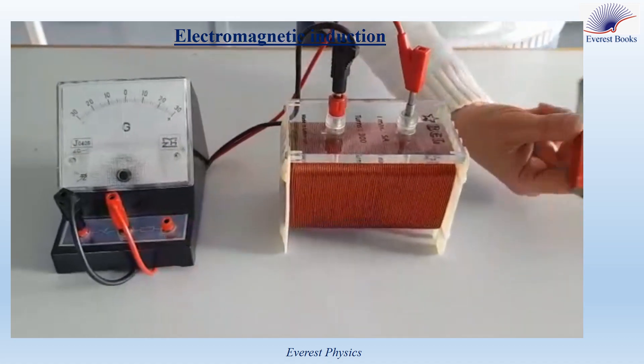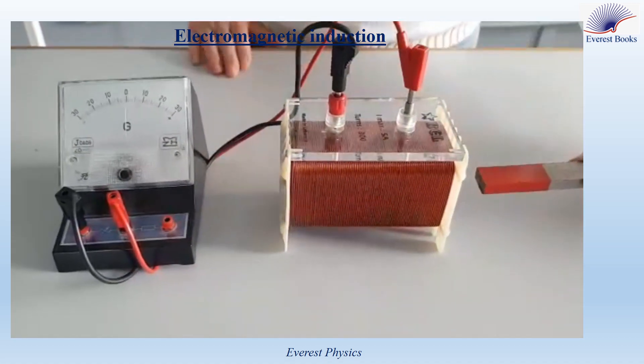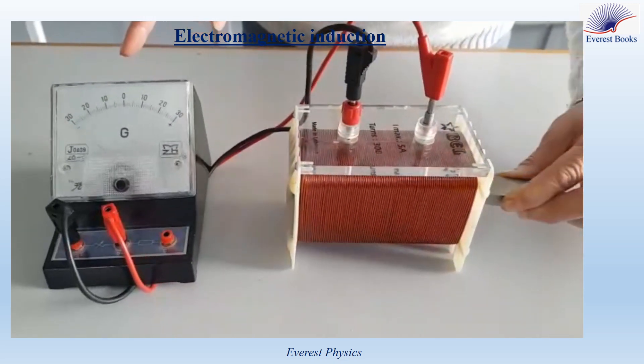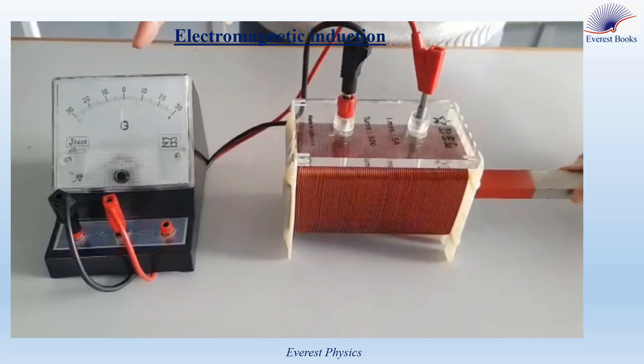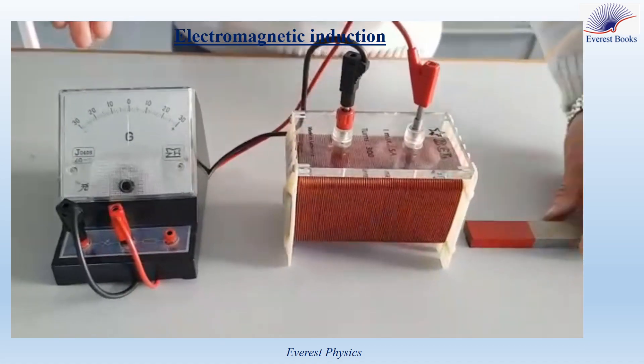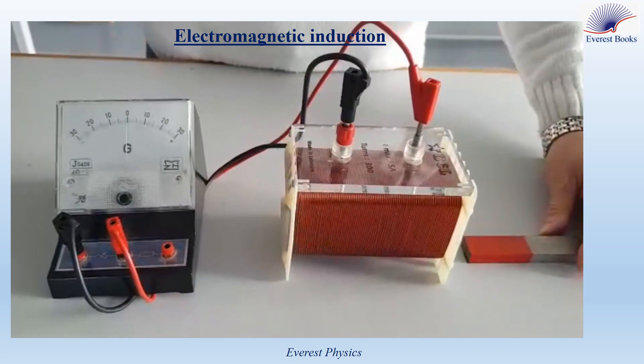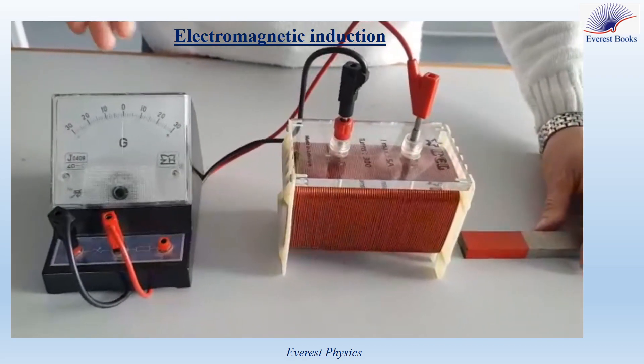Now I will reverse the poles of the magnet and repeat the same procedure. Observe, the needle is deflected in two opposite directions. Now what does this mean? If the needle is deflected, this means that the circuit carries an electric current.